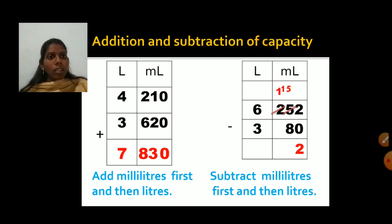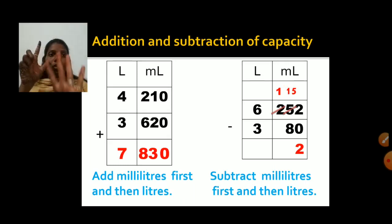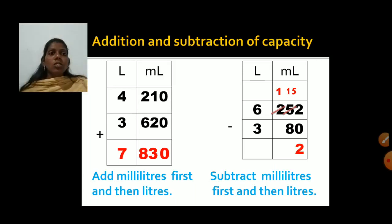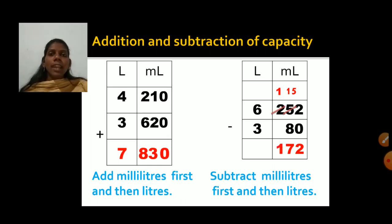Now we count after 8 up to 15: 9, 10, 11, 12, 13, 14, 15 — that's 7 fingers, so 15 minus 8 equals 7. We write 7. Now 1 will jump down since there is no number below it. So the milliliter result is 172 milliliters.